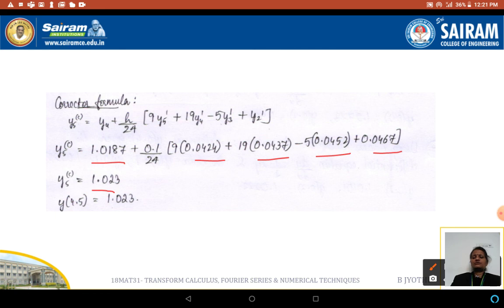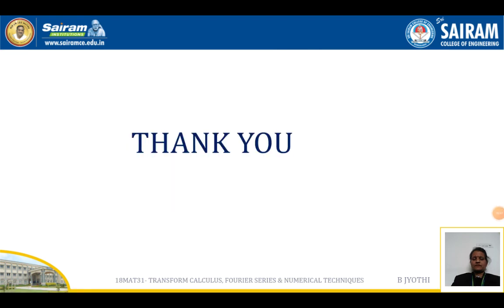If they have asked us to apply the corrector formula once again, this will be applied wherever this y₅(c) value is used. Using this y₅ you have to again compute y₅ dash and then do the correction again. That is the second correction. Thank you.